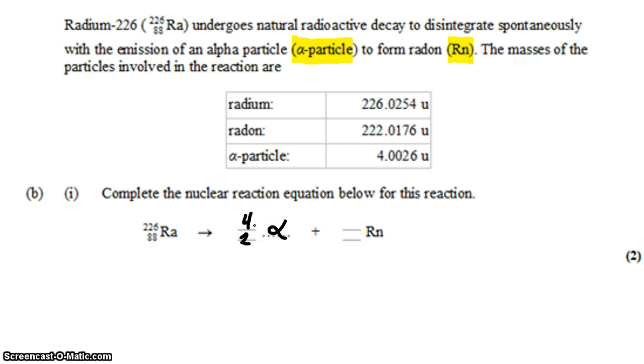So then what does the radon isotope have? Well, if we started with 226 nucleons and took out four of them to form the alpha particle, what remains is 222 nucleons.